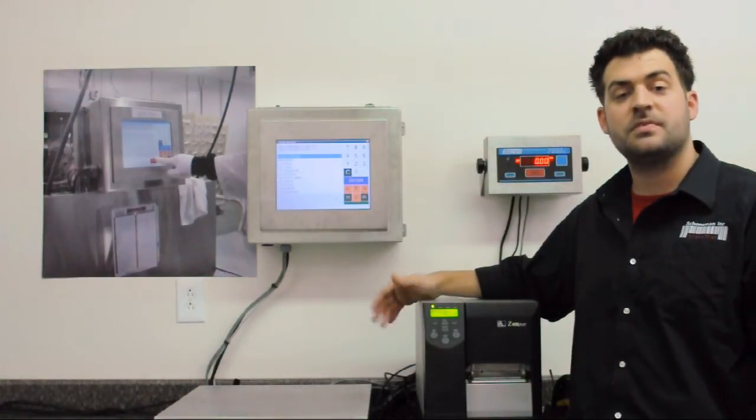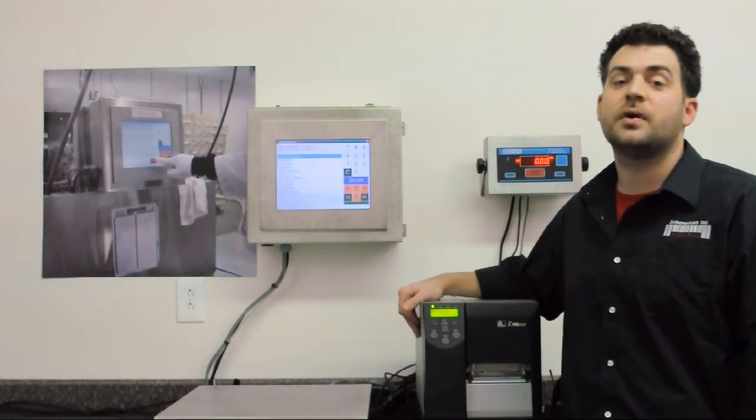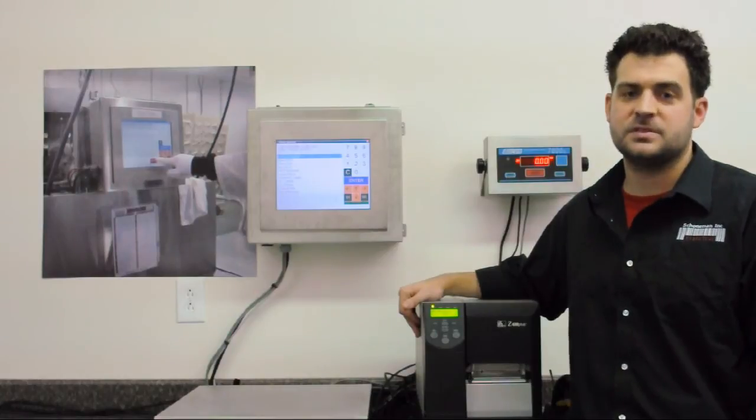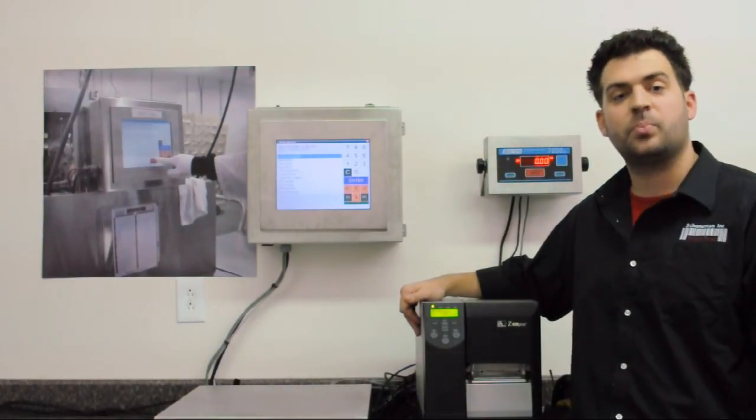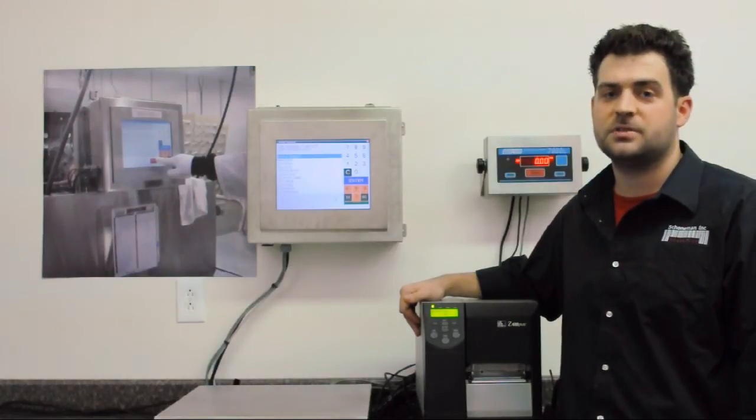Vistatrack is a real-time system so every time something is done at the plant Vistatrack is automatically updated back in the office. This eliminates all manual entry and any errors that may occur when production information is transferred back to the office.